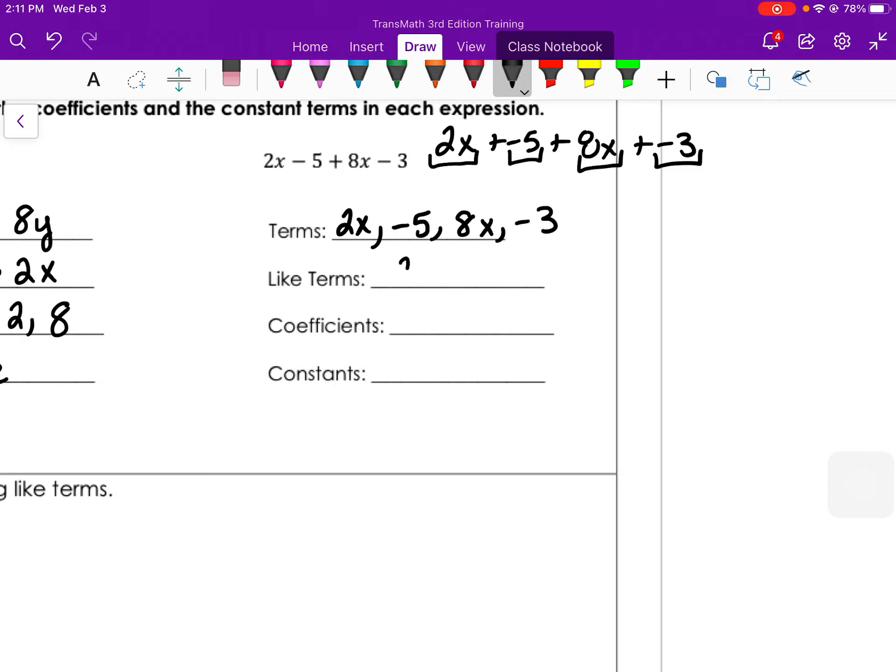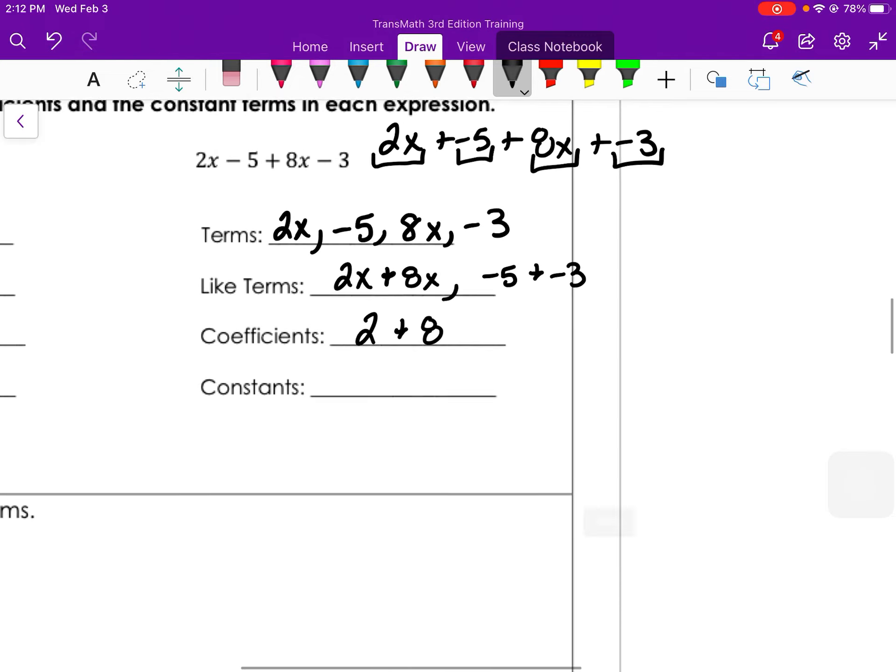The like terms are the 2x and the 8x are alike. And then the negative 5 and the negative 3 are also alike. So the 2x and 8x both have an x, and negative 5 and negative 3 are constants. Coefficients are the numbers in front of the variable. There are two coefficients in this expression: 2 and 8. And the constants are negative 5 and negative 3.